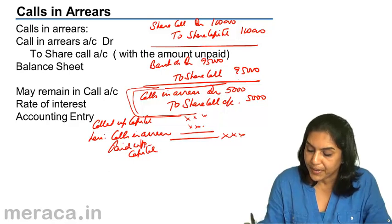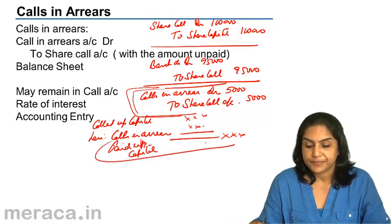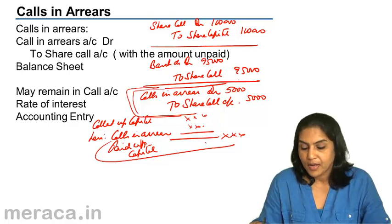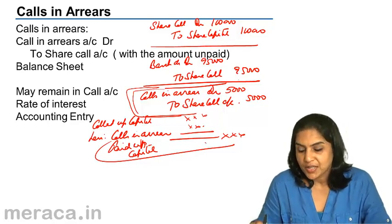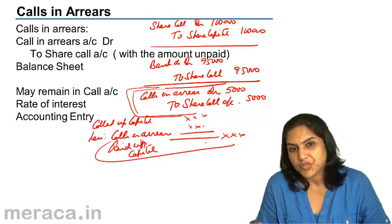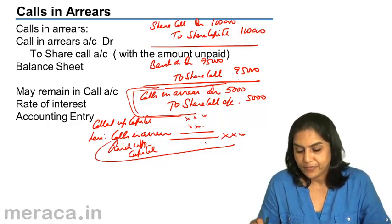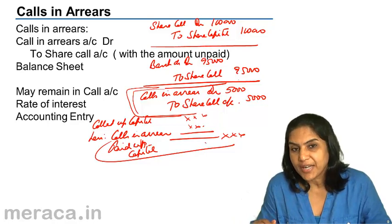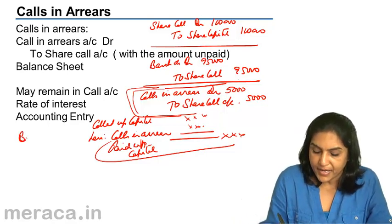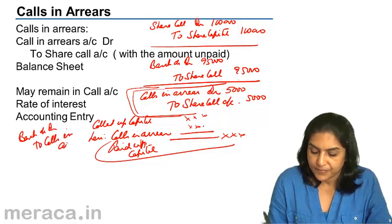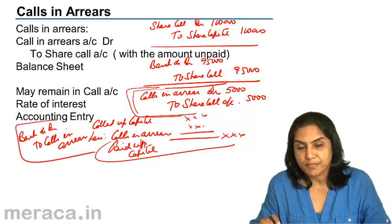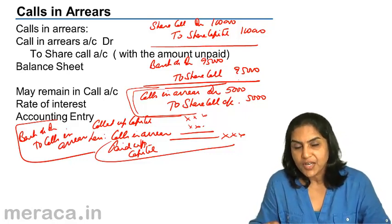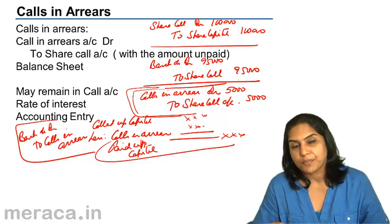Dividend is usually paid on the paid-up capital. For calls in arrears, interest may be charged, with the maximum rate of interest being 5% per annum. If money is received later, the entry becomes: bank account debit to calls in arrears. To summarize: calls in arrears arise when a call is made but the money is not received — that money which has not been received is said to be calls in arrears.